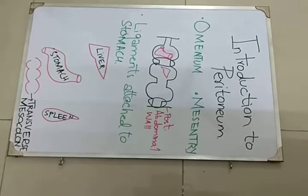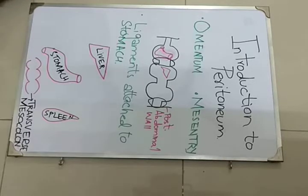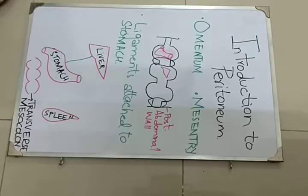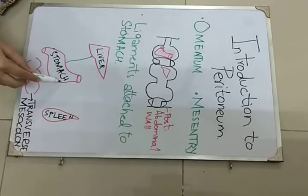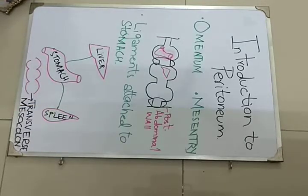There are ligaments which are attached to the stomach — actually three ligaments are attached to the stomach, or we can also call these ligaments as omentum, because they are joining the stomach to other organs. For example, the omentum which joins the liver to the stomach is known as the gastro-hepatic ligament or gastro-hepatic omentum. The ligament or omentum which joins the stomach to the spleen is called the gastrosplenic ligament.